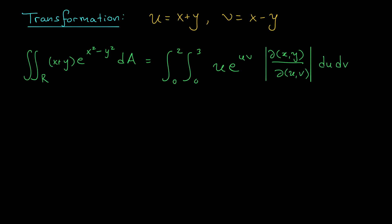So here I've got my transformation u equals x plus y, v equals x minus y, and my change of variables formula. You can see I've replaced the bounds on my integrals using my bounds on u and v. I've also replaced my function using expressions involving u and v that we found on the previous slide. The last thing we'll need before evaluating this integral is our Jacobian.